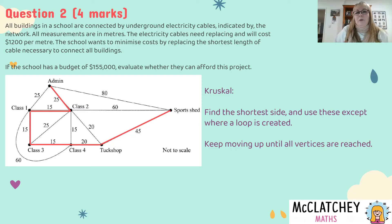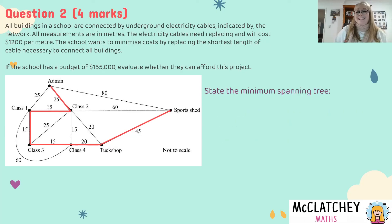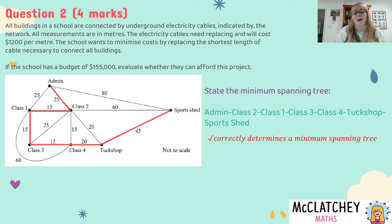I have a quick scan of the network. I'm not going to choose 60 because that will close the shape in. In fact my work here is now done. I don't even need that 80 from the admin to the sports shed because that closes the whole network in as well. So now I actually have a minimum spanning tree, every different building is reached and reached once. I also need to not just communicate that on the diagram I need to make sure I state what that spanning tree is. I've just done it in words from admin to class 2 to class 1 to class 3 to class 4 to the tuck shop to the sports shed. So I've stated the minimum spanning tree I've earned my first mark out of 4.